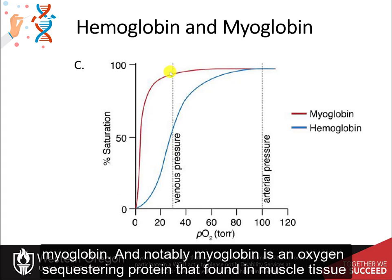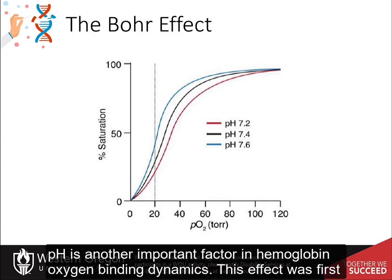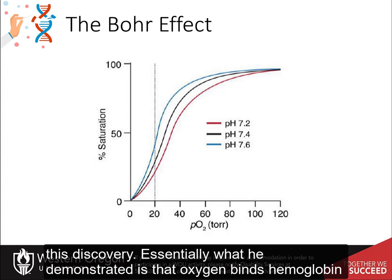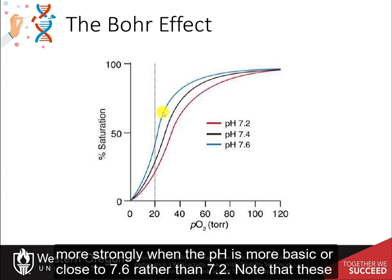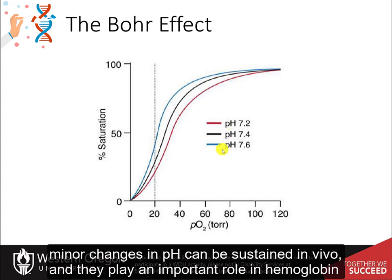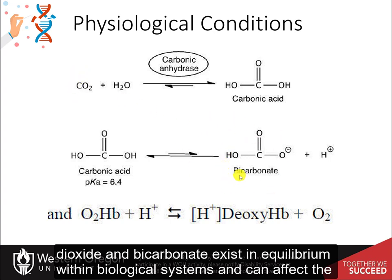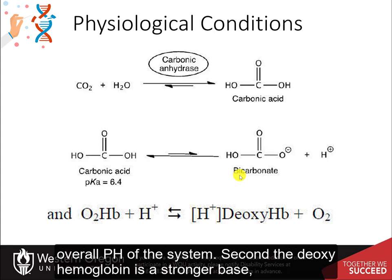pH is another important factor in hemoglobin-oxygen binding dynamics. This effect was first described by Christian Bohr — yes, Niels Bohr's father — who won the Nobel Prize in Medicine for this discovery. He demonstrated that oxygen binds hemoglobin more strongly when the pH is more basic, around 7.6, rather than 7.2. Three important factors underlie this: first, carbon dioxide and bicarbonate exist in equilibrium within biological systems and affect overall pH.